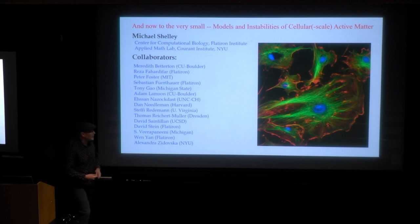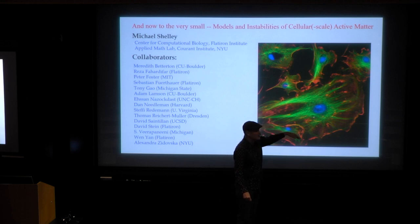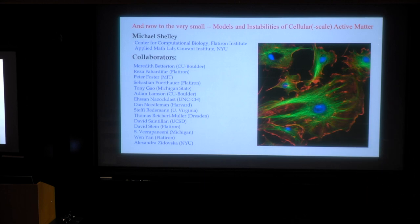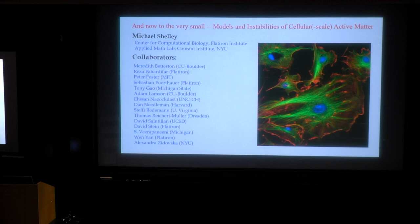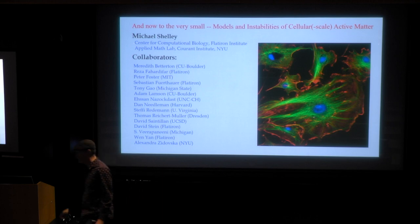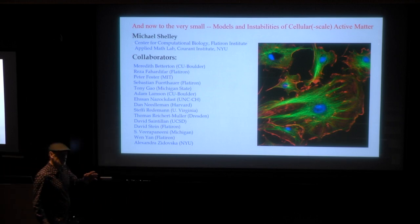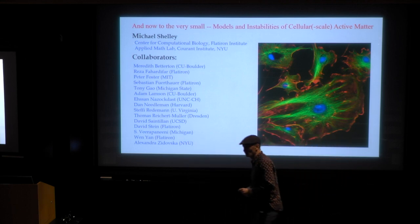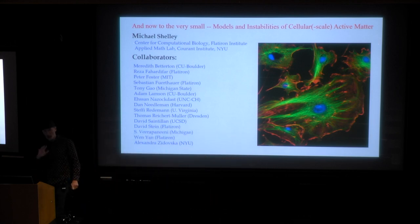What I'm going to talk about are active matter systems related to components inside of the cell. Green are microtubules — long, stiff biopolymers that do a lot of the force transduction inside of cells. This is the cell nucleus, and what's being fluoresced are histones, which are big proteins that DNA gets wrapped around. The red is labeling actin, which has an active network that sits on the boundary of the cell, lends it rigidity, and sets up polarity.